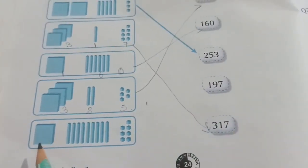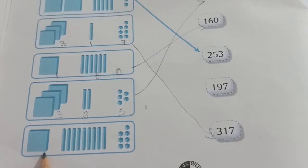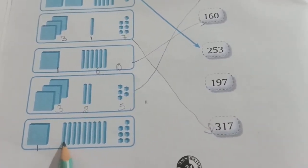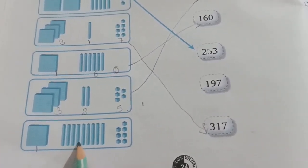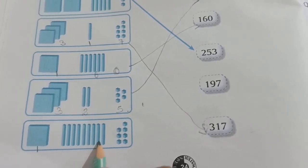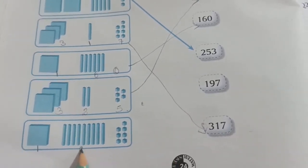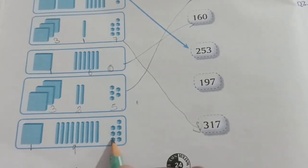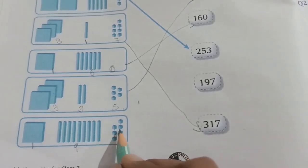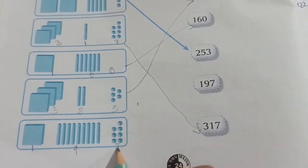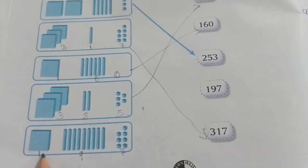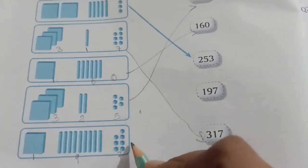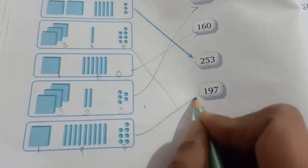Now the last one: one, two, three, four, five, six, seven, eight, nine — nine tens means ninety. And one, two, three, four, five, six, seven — seven ones means seven. So we match it with the correct number.